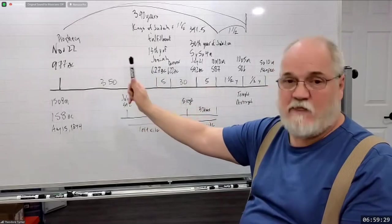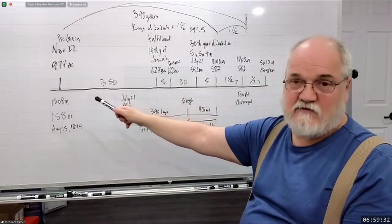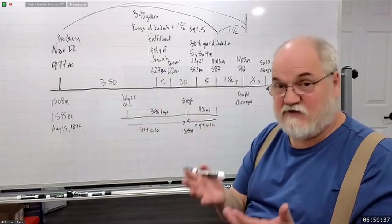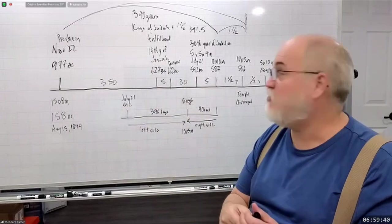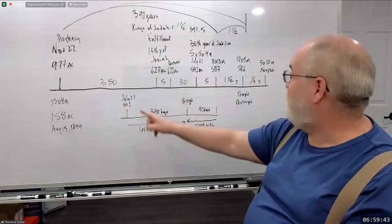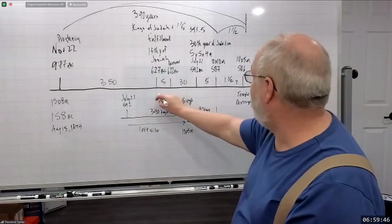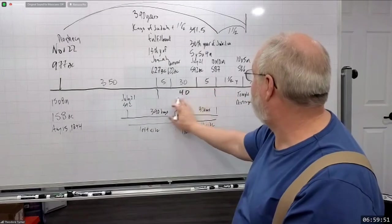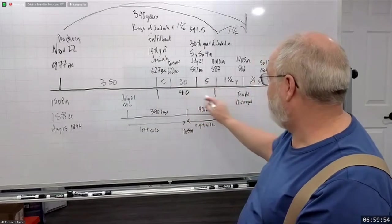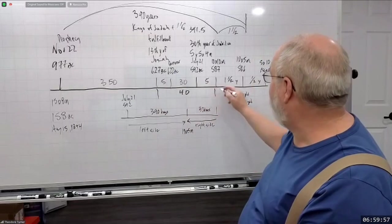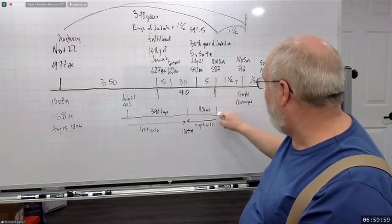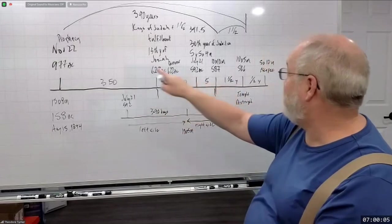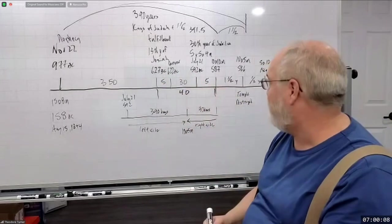Now, the question is: why is Ezekiel referencing this? Why is he referencing the prophecy of Messiah? Because we know that he's referencing it — we figured this out, that this is the starting point for both. This here is going to be the 40 years. So you can see the 40 years here. They're both going to end here. So the 40 days represent the start of the siege and the 390 days represent the start of the siege — you have these two overlapping day-for-year prophecies.